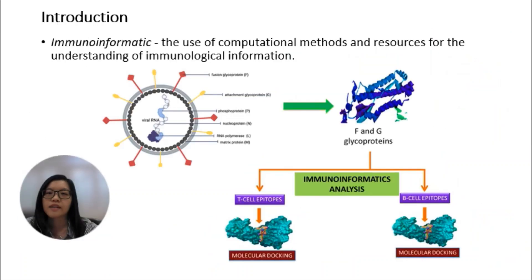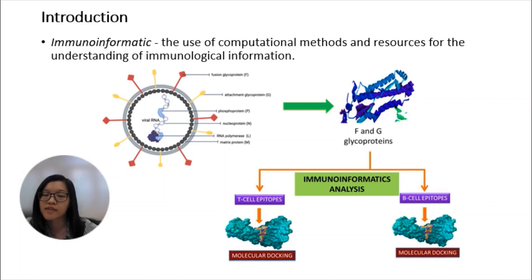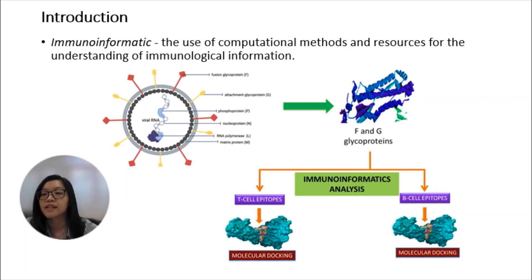What is immunoinformatics? Immunoinformatics, also known as computational immunology, is an interface between computer science and experimental immunology. It involves the use of computational methods and resources for understanding immunological information. Prediction of B and T cell epitopes has long been the focus of immunoinformatics and many tools have been developed since then.